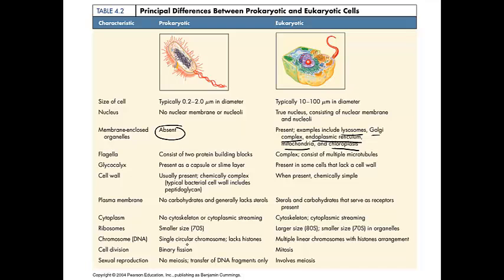Also consider how they divide. Prokaryotic cells divide by binary fission — 'binary' means two, 'fission' means splitting — and they make genetically identical copies of themselves. In eukaryotic cells, the process of mitosis makes genetically identical daughter cells as well.